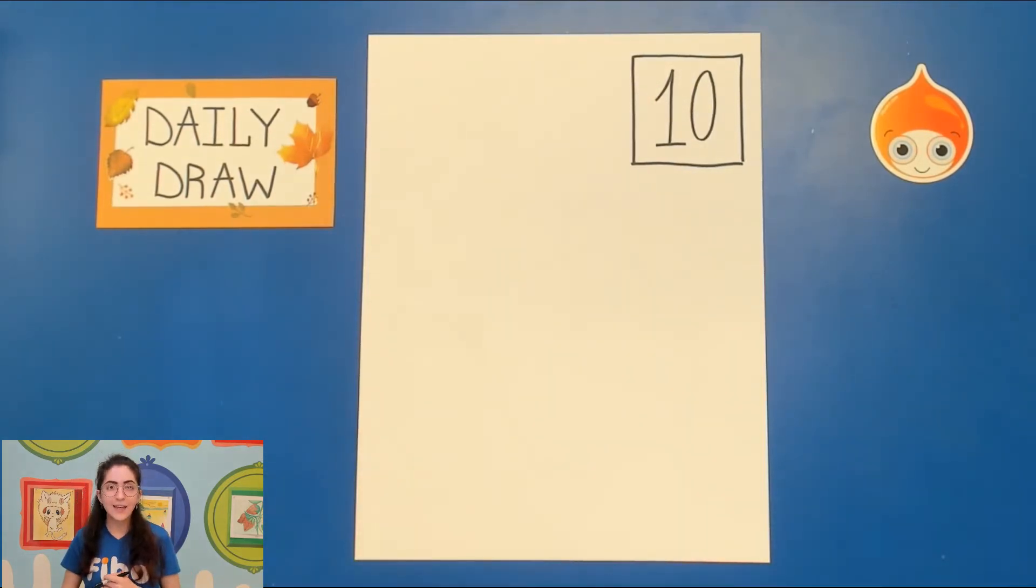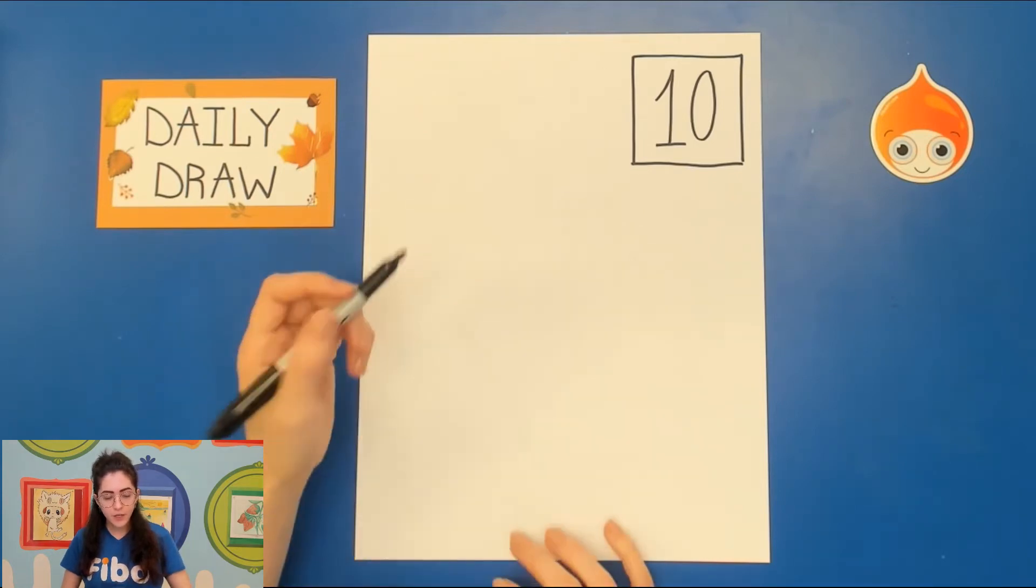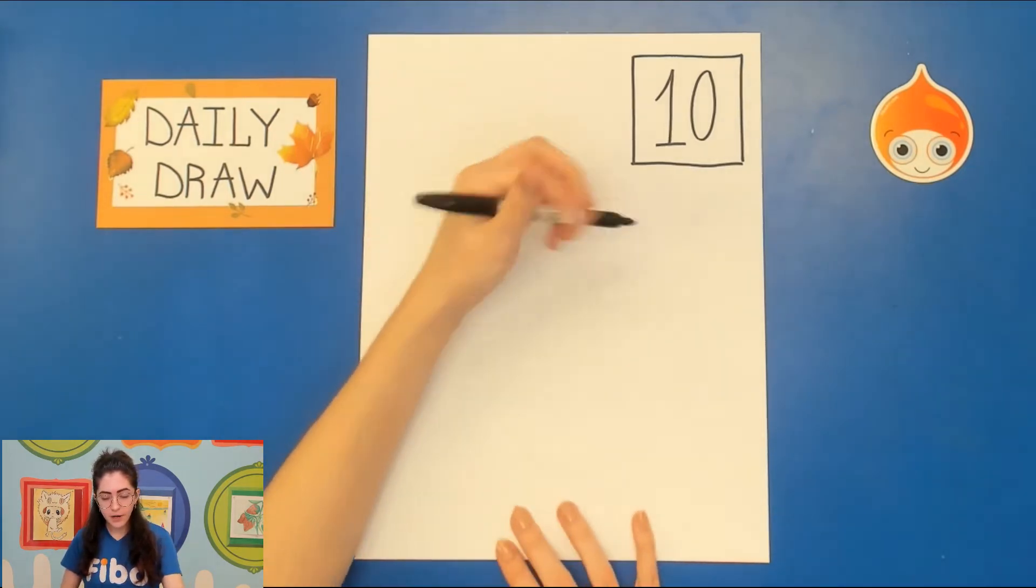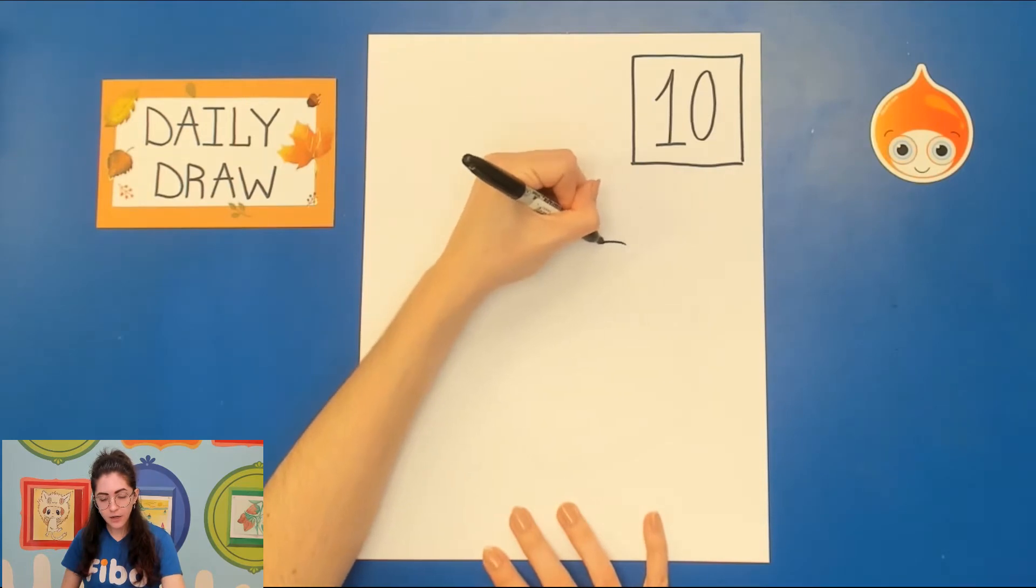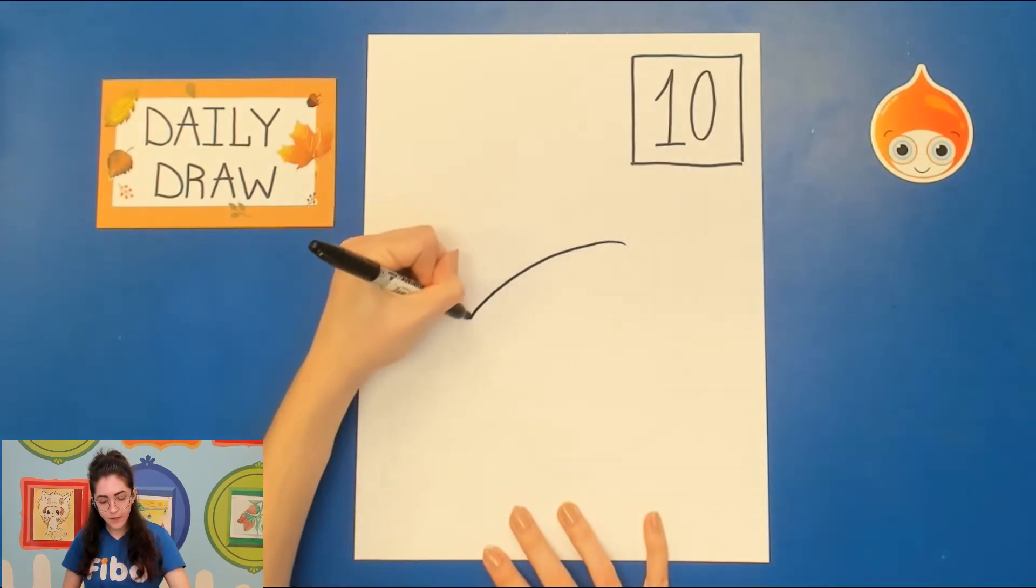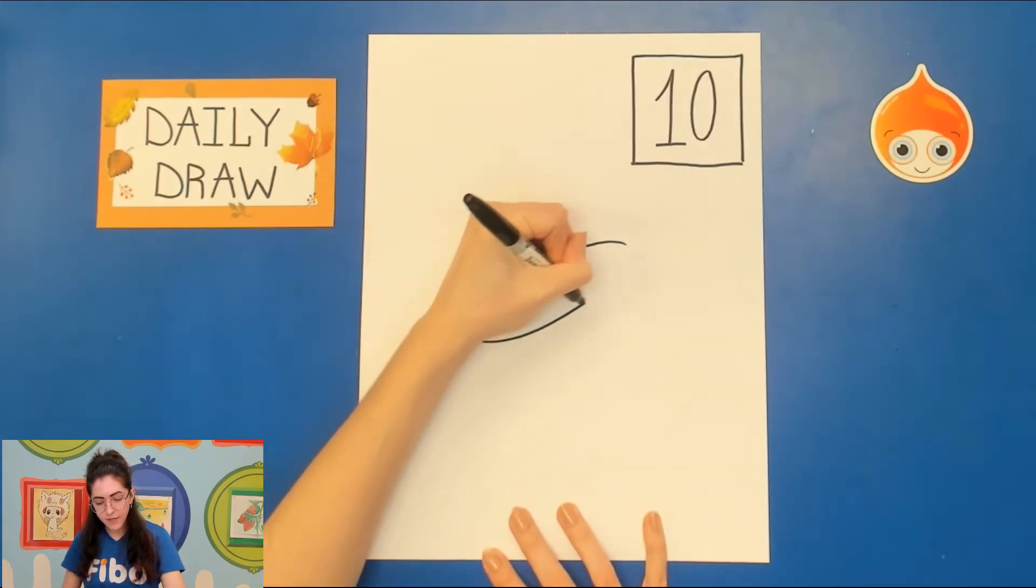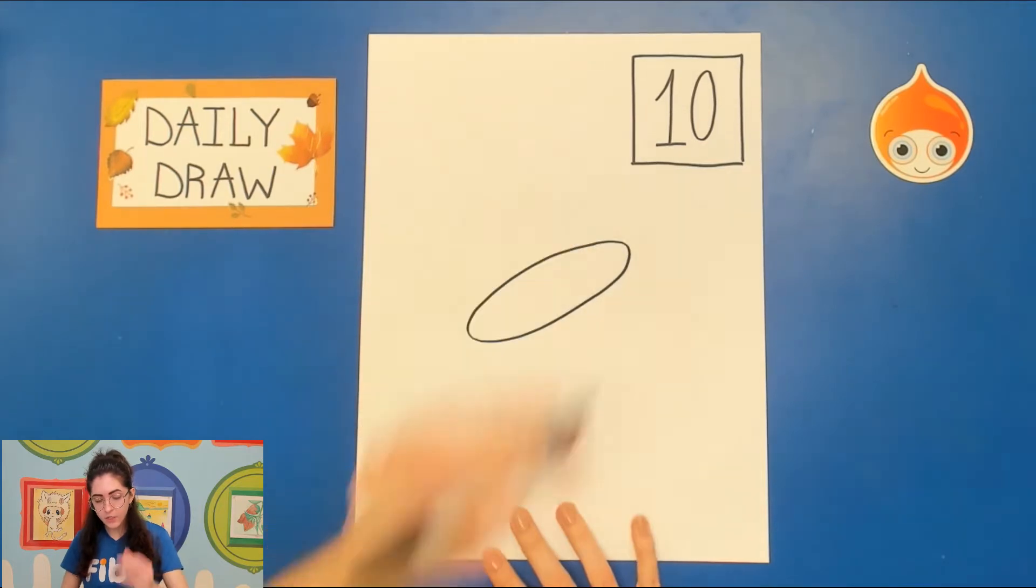Now when we're drawing a cup or something that is cylindrical, that is a cylinder, we really have to think about the different ways the shape curves in three-dimensional space. So what I want us to do first is I want us to go ahead and draw an oval right about here on your paper. I want this to be slanted we're going to have kind of this dynamic composition today.